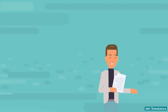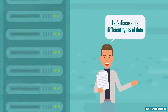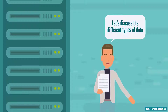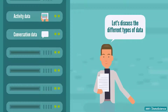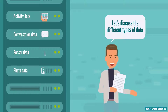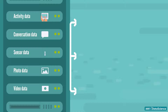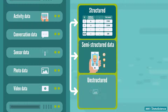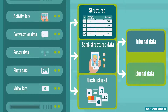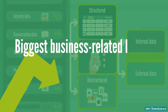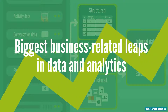In this lesson, I would like to discuss the different types of data that we are now able to collect. We will cover activity data, conversation data, sensor data, as well as photo and video data. Please bear in mind that the format of these data types can be structured, semi-structured, or unstructured, and they can be generated internally or brought in from external sources. These techniques represent some of the biggest business-related leaps in data and analytics, which makes them useful for consideration in any data strategy.